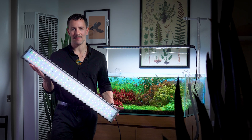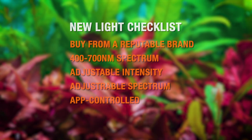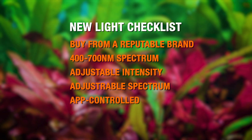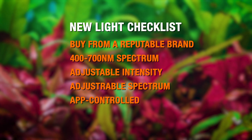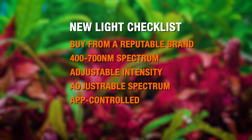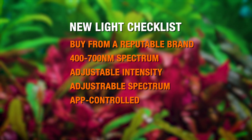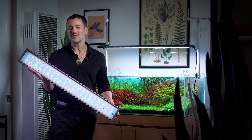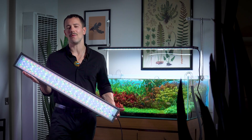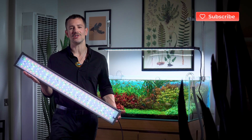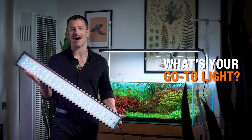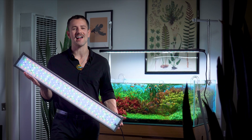Here's the no-BS checklist when purchasing a light: buy from a reputable brand; make sure the light produces light in the 400 to 700 nanometer range; make sure the light is intensity adjustable; and even better, get a light that's smart app-controlled so you can adjust intensity, duration, photo period, and RGB channels all from your phone. There's really no need to overcomplicate this topic for the average hobbyist. If you found this video helpful, like the video, subscribe to the channel, and hit the bell. Drop me a comment below — what's your go-to light that you'd recommend to hobbyists? Thanks for watching, I'll catch you guys and gals next time.